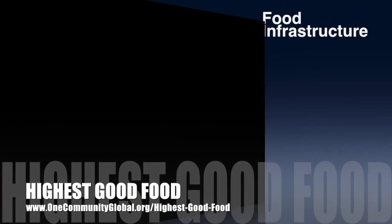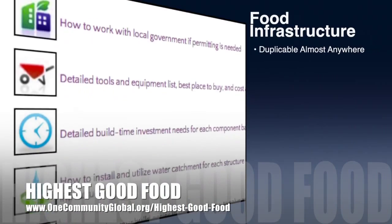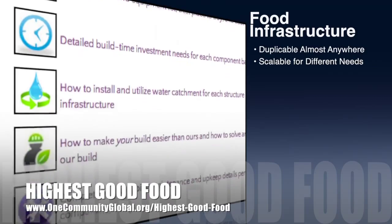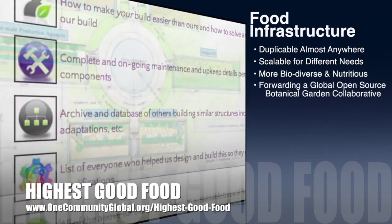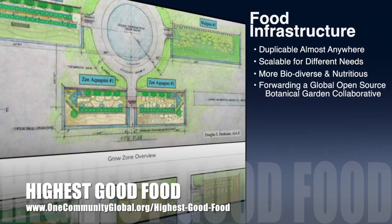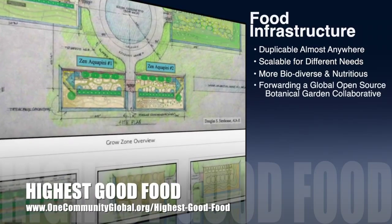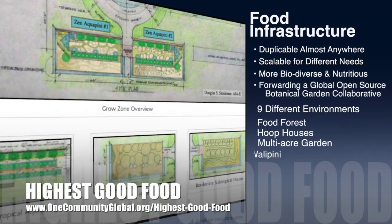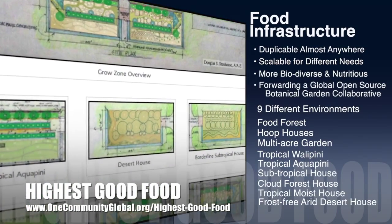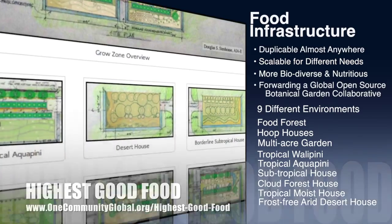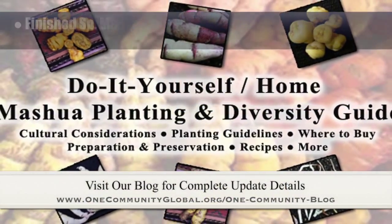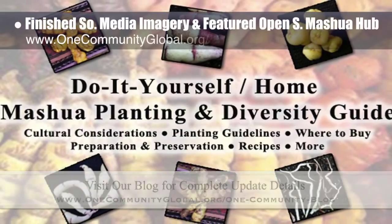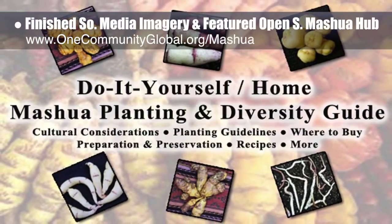OneCommunity's approach to highest good food is duplicable almost anywhere, scalable for different needs, more biodiverse and nutritious, part of forwarding a global open source botanical garden collaborative, and includes nine different free shared and duplicable growing environments. This week, the core team working on highest good food finished the social media imagery and featured our open source Mashua Hub.